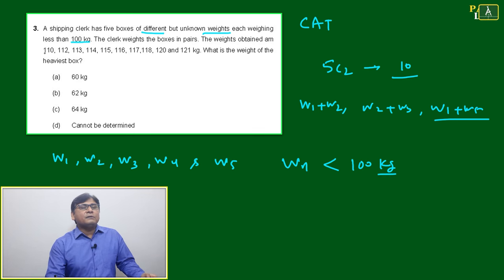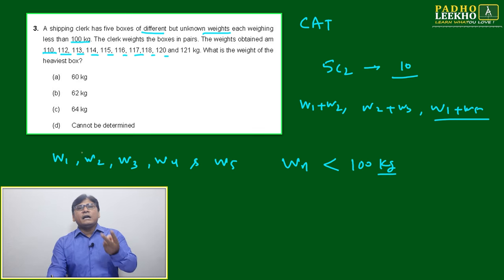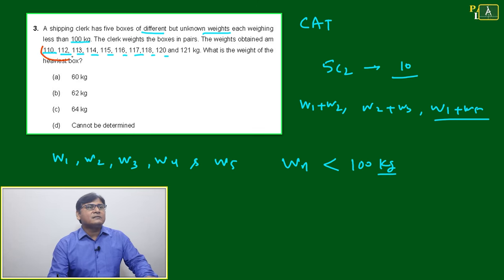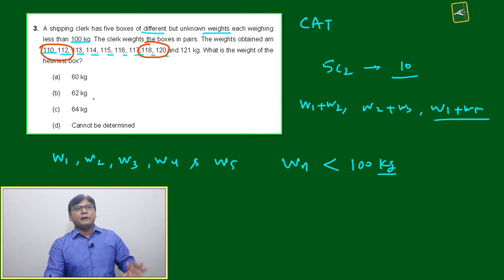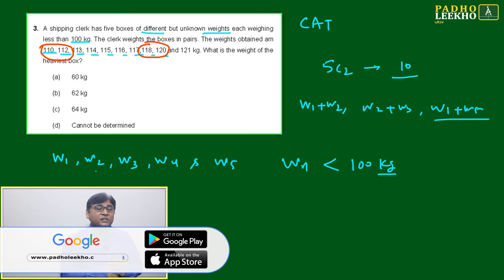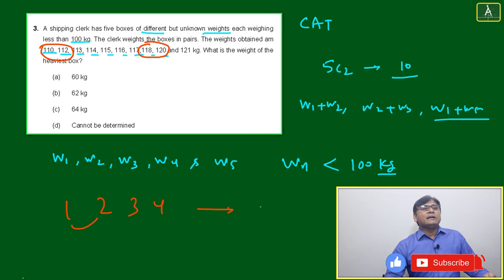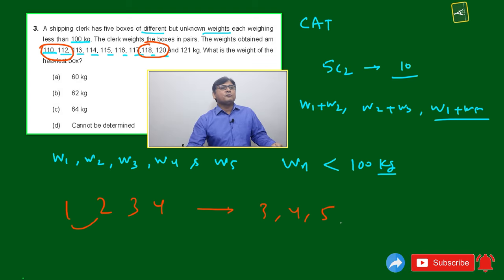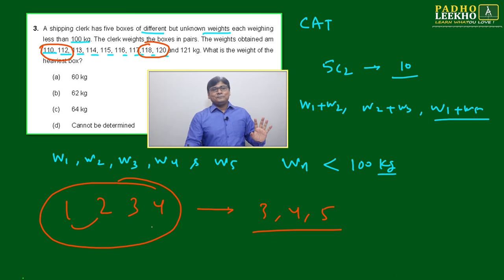The weights obtained from the pairs are: 110, 112, 113, 114, 115, 116, 117, 118, 120, 121. Observation: almost all values are consecutive natural numbers, except two cases — 110 to 112 jumps by 2, and 118 to 120 jumps by 2. Based on this pattern, the difference between any two consecutive individual weights will be either 1 or 2, meaning the individual weights are also consecutive in nature.